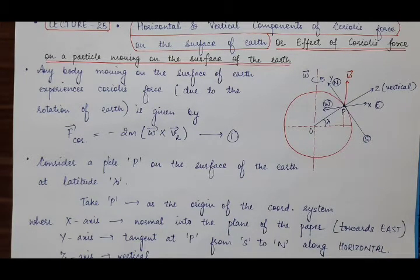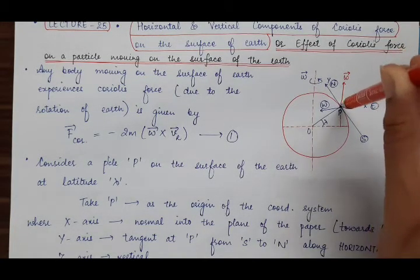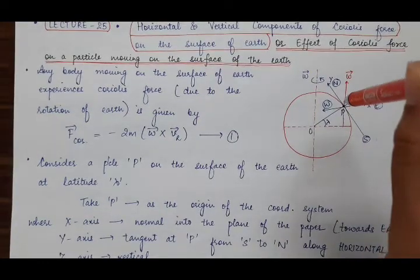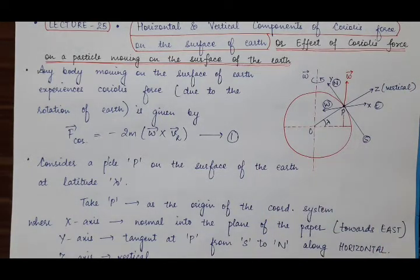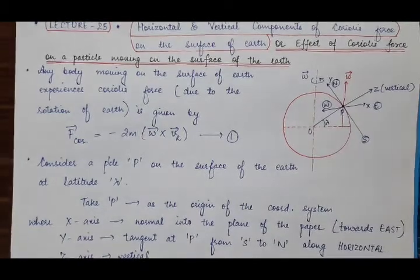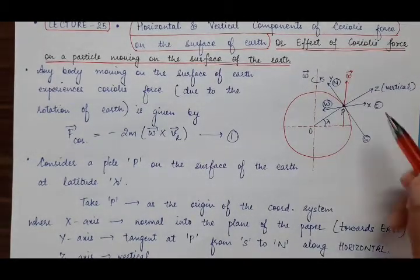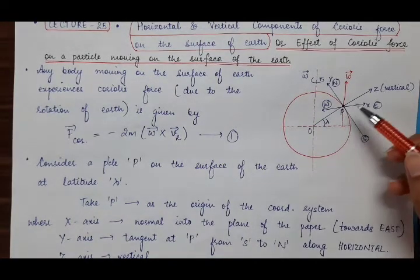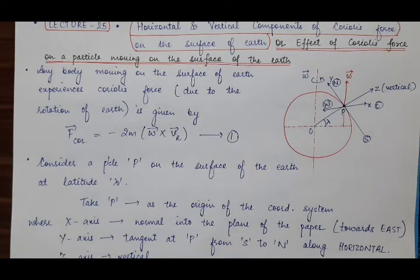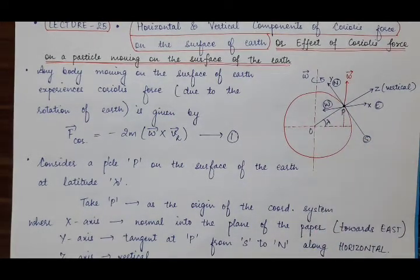What will be the x-axis, y-axis, and z-axis? The direction of x-axis will be perpendicular to the paper and into the plane of the paper — this direction cannot be shown on a two-dimensional paper, so x-axis is into the plane of the paper. The z-axis is the vertical axis. The y-axis is the horizontal axis, drawn as the tangent to the surface of the earth, and it will be perpendicular to the radius because tangents are always perpendicular to the radius of the sphere.